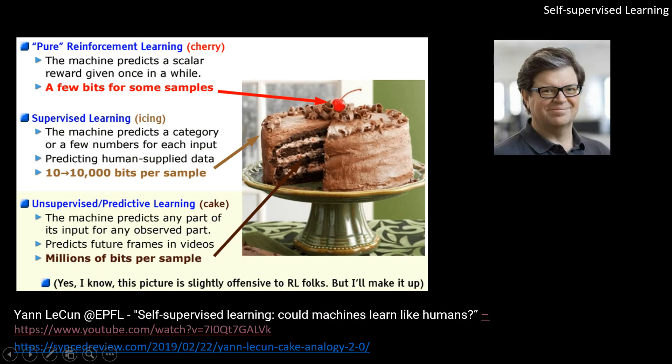This slide from Professor Yann LeCun, from his talk at EPFL, uses a really beautiful cake analogy. He compares the cake itself to unsupervised or self-supervised learning — learning from unlabeled data — the icing on the cake to supervised learning, and the cherry on top to reinforcement learning. The cake is the largest portion because unlabeled data is really huge, and we can harness all that information.